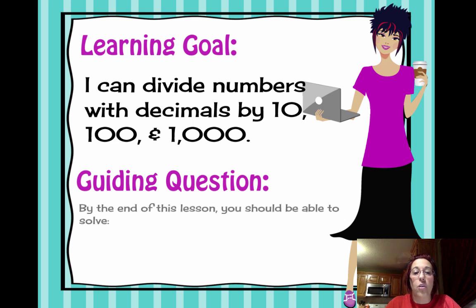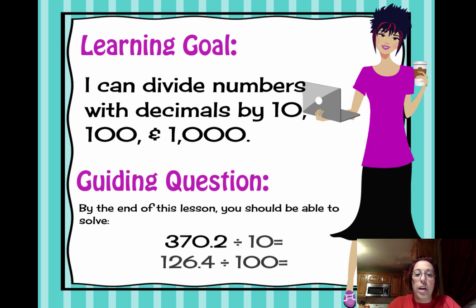So for our guiding question, by the end of this lesson, you should be able to solve the following problems: 370.2 divided by 10, and 126.4 divided by 100. Now when I say solve, I mean solve using mental math, not actually doing the division problem.